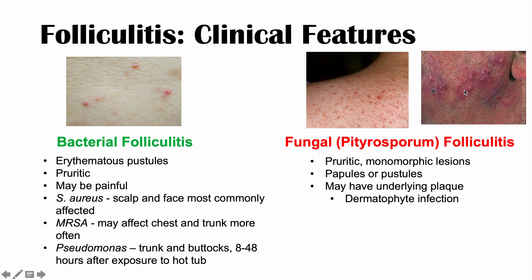You can see a raised area underneath with papules on top of that plaque. With regards to fungal folliculitis, the neck, back, and shoulders are most often affected. To summarize: fungal folliculitis is pruritic, monomorphic in appearance, and the neck, back, and shoulders are the most commonly affected areas.